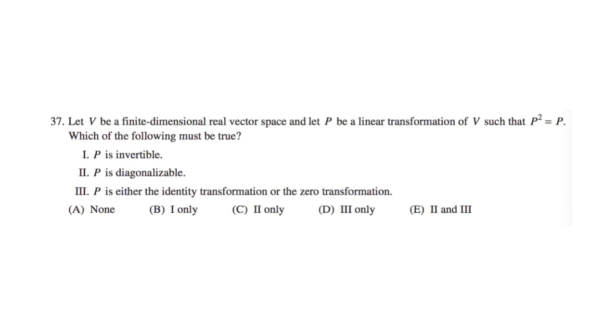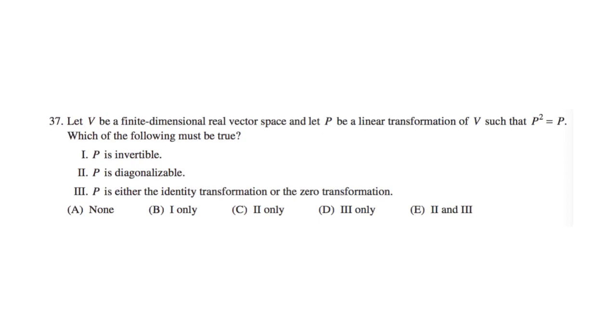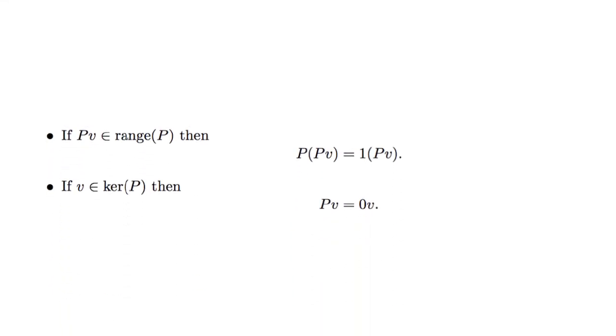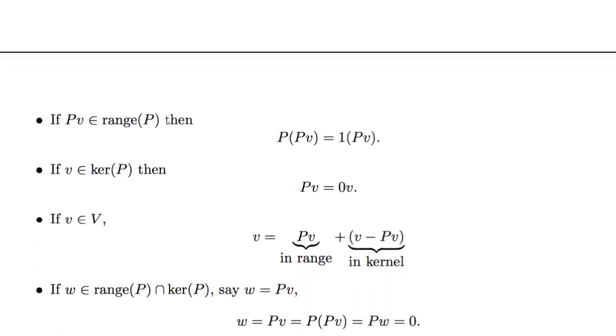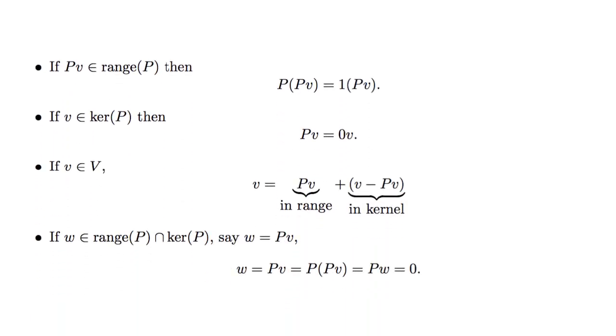Regardless, we're still going to give a complete answer here and show why P, in fact, has to be diagonalizable. Alright, so first notice, if you pick an element of the range of P and apply P to that vector, you're going to get 1 times that vector. So any non-zero vector in the range is going to actually be an eigenvector with eigenvalue 1. And for all linear transformations, any non-zero vector in the kernel is going to be an eigenvector with eigenvalue 0. So both the range and the kernel of this linear transformation are eigenspaces.